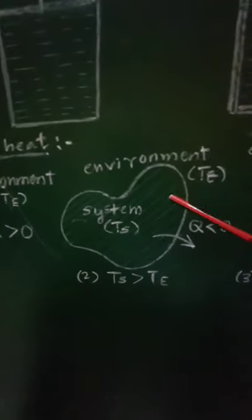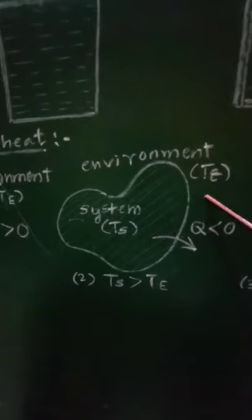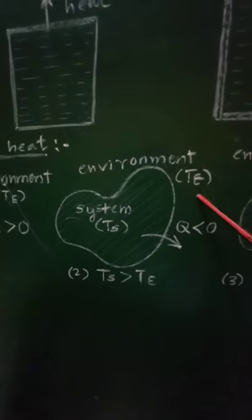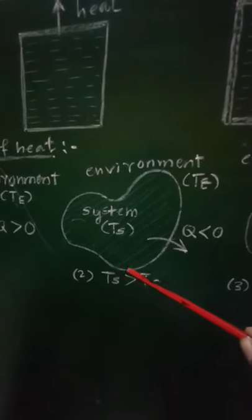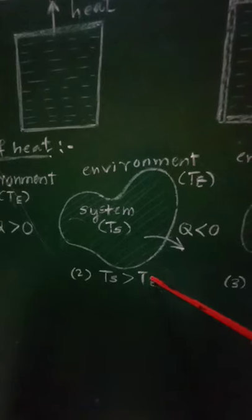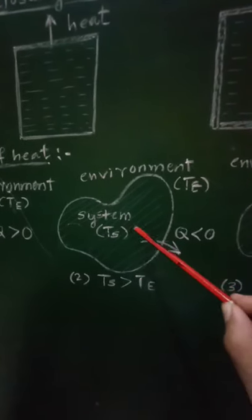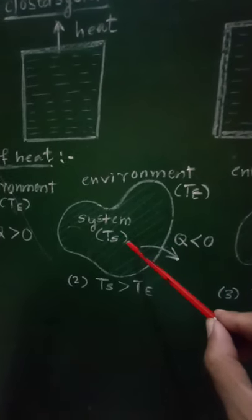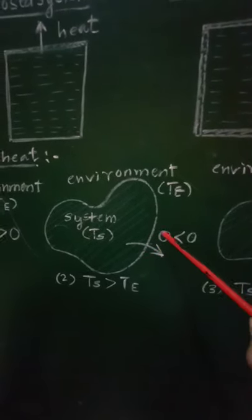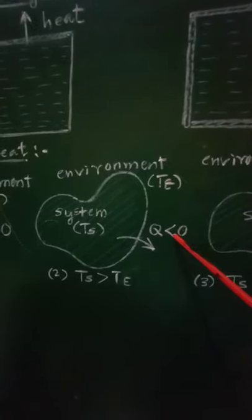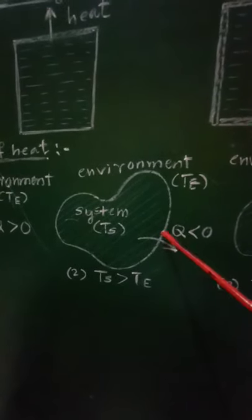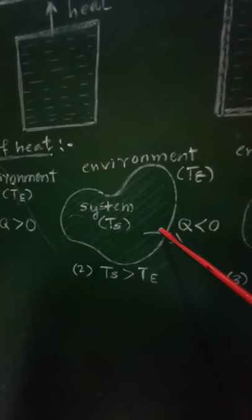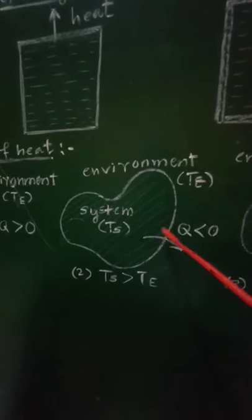In the second case, if the temperature of the system is greater than the temperature of the environment, the system will lose some energy Q to its environment. Heat energy is given out by the system, and therefore Q is less than 0, that is negative. So when TS is greater than TE, there will be a loss of heat energy by the system.